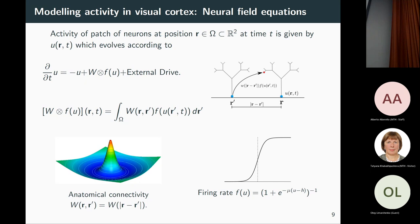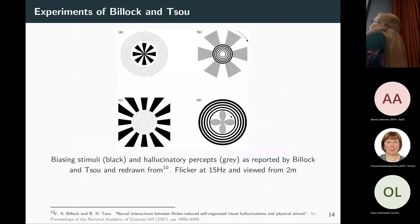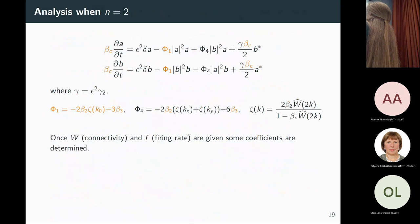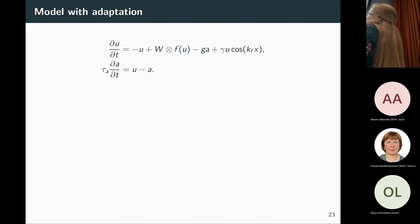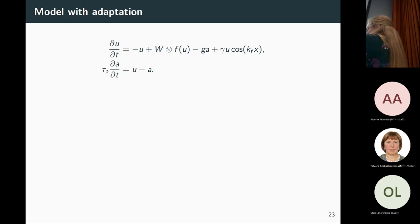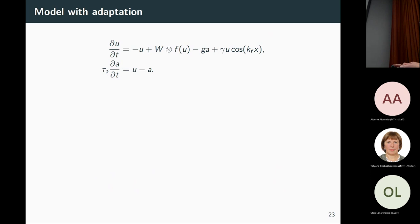A question about whether the adaptation term corresponds to some delay effect. The adaptation adds a negative feedback to decrease activity once it reaches a certain threshold set by the interaction parameter G. So it's a feedback mechanism rather than a pure delay.